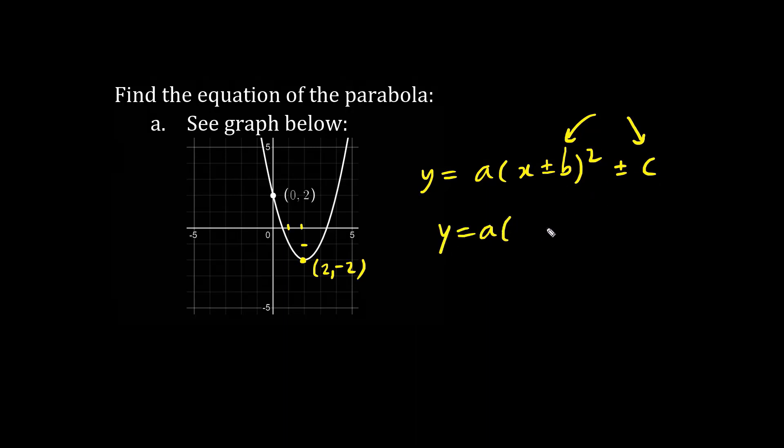So we have y equals A. We don't know what the A value is. That's the vertical stretch. We have x minus 2 squared minus 2. Minus 2 actually means 2 units to the right. When it's plus 2, the vertex moves 2 units left from the origin. And minus 2 means 2 units down.